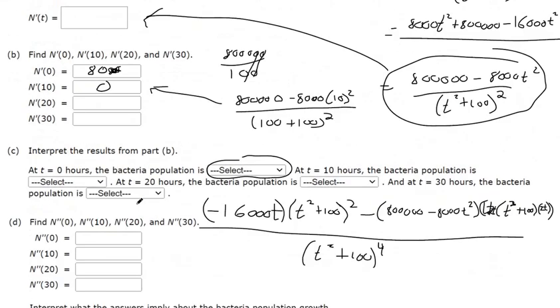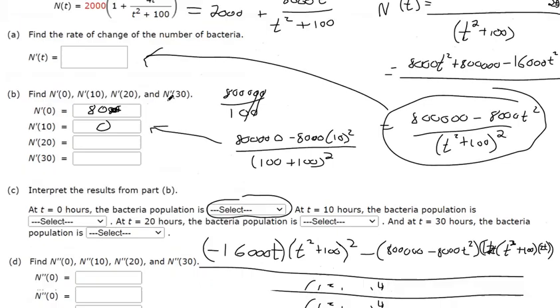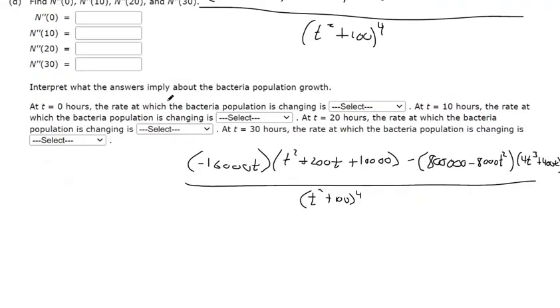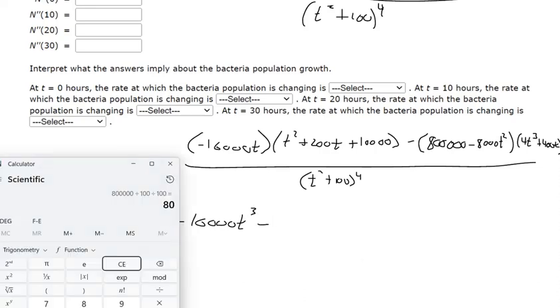You might be wondering why they chose such a crazy function. But this is a logistic function, which can be used to model like the population of bacteria. Because bacteria will grow and grow and grow, and then its growth starts slowing down once its resources are all used up. I'll distribute that 16,000t. This is just ugly though, isn't it?